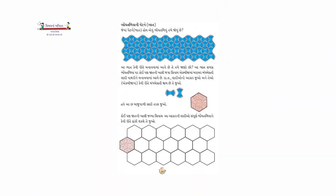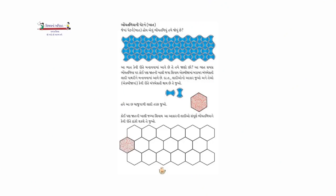ચાલો, તમારા ચોપડીના પાના નંબર સિત્તેર ખોલો — જે બ્લોક જમીન ઉપર નાખે છે, ભોઇતળિયા આમાં એ બ્લોકની પેટર્ન છે. (Open your textbook to page seventy — the blocks placed on the floor, this shows the pattern of those floor tiles.) તો આ ભોઇતળિયા વાળી ડિઝાઇન બનાવો — ભોઇતળિયામાં આપણે જે પણ આકારોની ગોઠવણી કરીએ, ક્યાંય ખાલી જગ્યા ન રહે, અને આખું ભોઇતળિયું ઢંકાઈ જાય. (Create a floor tile design — whatever arrangement of shapes we make on the floor, no space should remain empty, and the entire floor should be covered.)